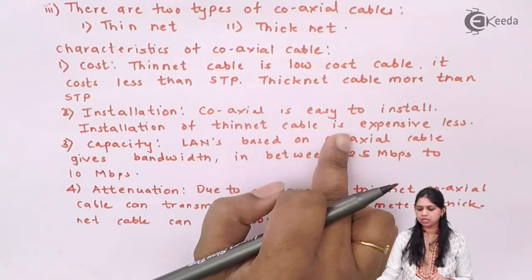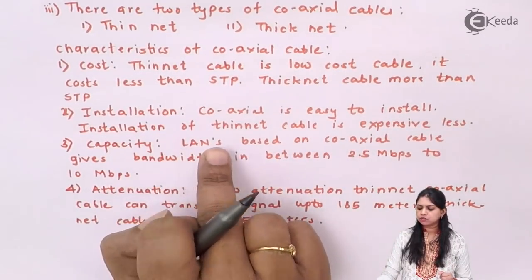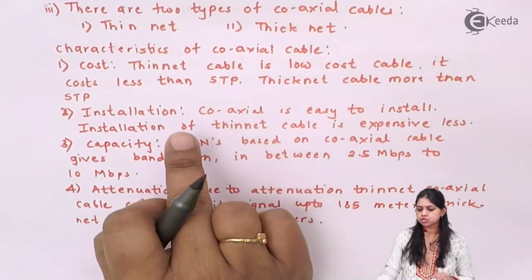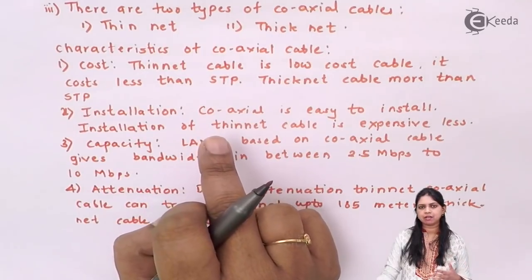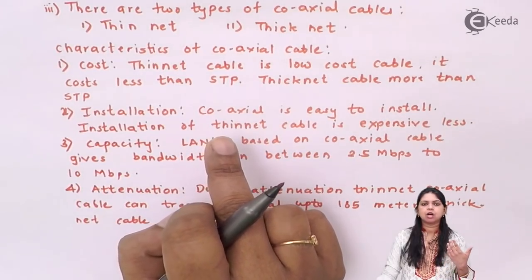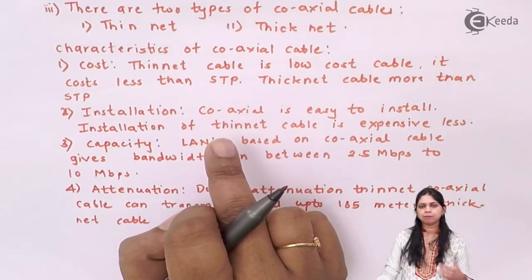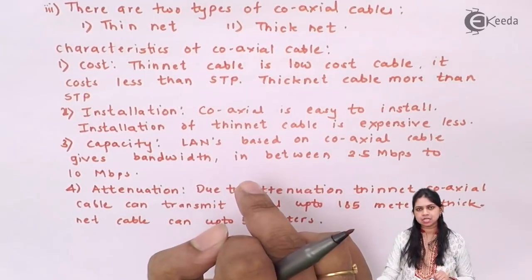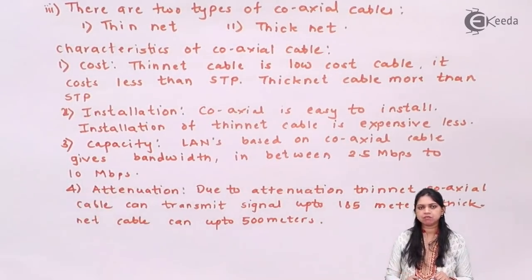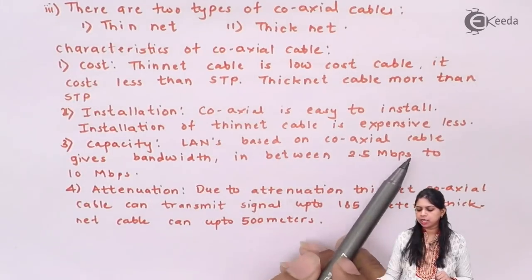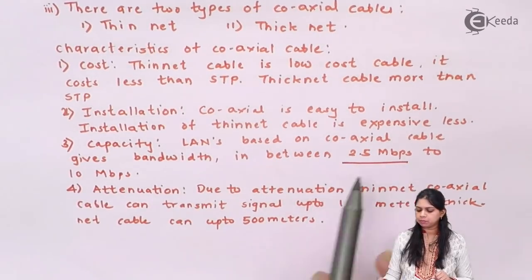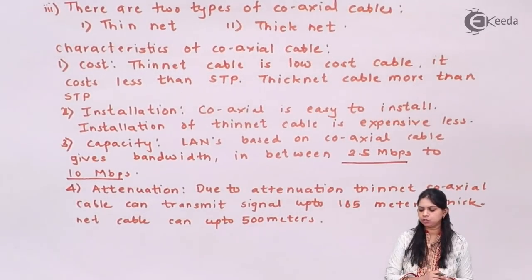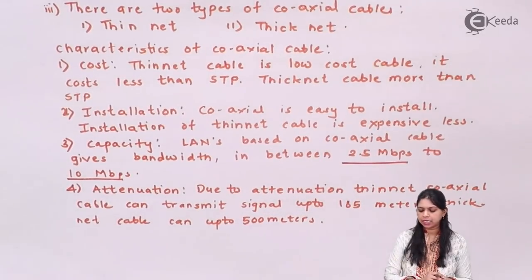Regarding installation, coaxial cable is very easy to install and the thin net cable is less expensive to install, so we do not need a very high installation requirement for coaxial cable. Regarding capacity, the best coaxial cable for LANs gives a bandwidth between 2.5 Mbps to 10 Mbps.